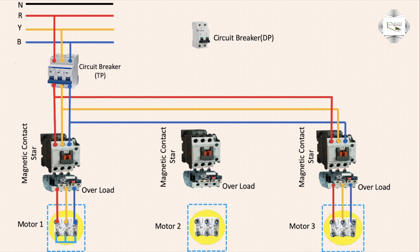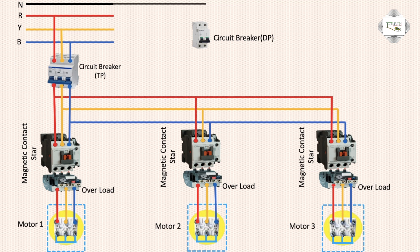The other magnetic contactor connection goes out to the motor terminals W1, V1 for the second motor. The star connection line short is applied. For the third motor, the second magnetic contactor input connects and the star connection line short is completed with the switching section.